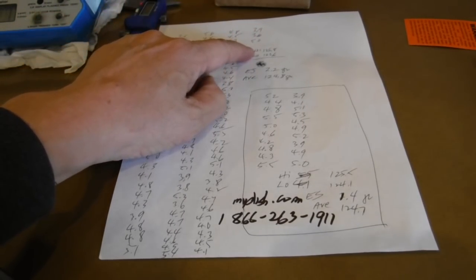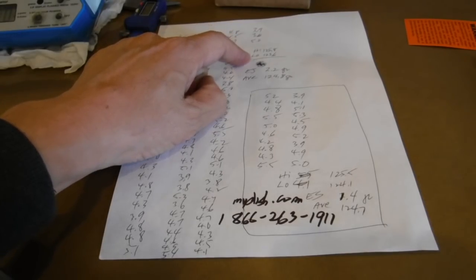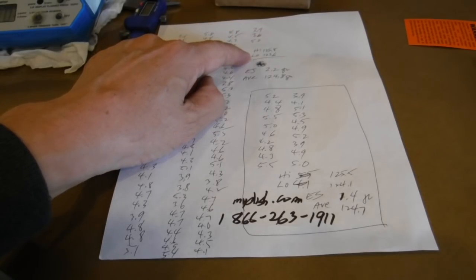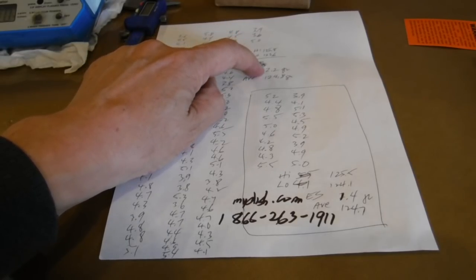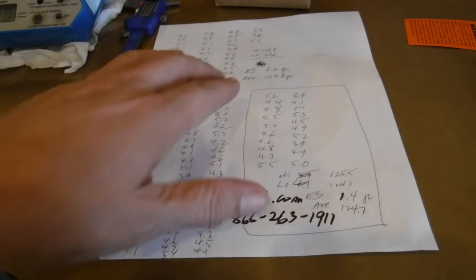got a high of 125.8 grains, a low of 123.6 grains, extreme spread of 2.2 grains, and the average is 124.8.